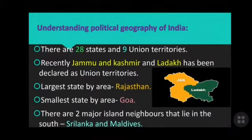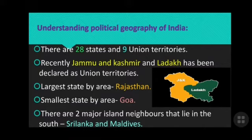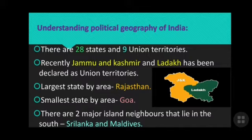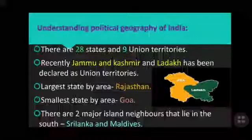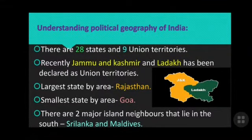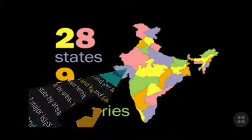Other than the seven neighboring countries, India has two major island neighbors in the south: Sri Lanka and Maldives. The narrow strip of water called Palk Strait connects India with Sri Lanka. These aspects of political geography give a clear picture of India. Remember: Rajasthan is the largest state, and Goa is the smallest.